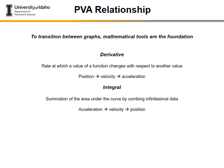Moving from position to velocity to acceleration, we are taking the derivative — the rate at which the function's value changes with respect to another value. That is essentially what we're doing by taking the tangential slope. If we wanted to move the other direction, from acceleration to velocity to position, we take the integral — summing the area under the curve by creating trapezoids.